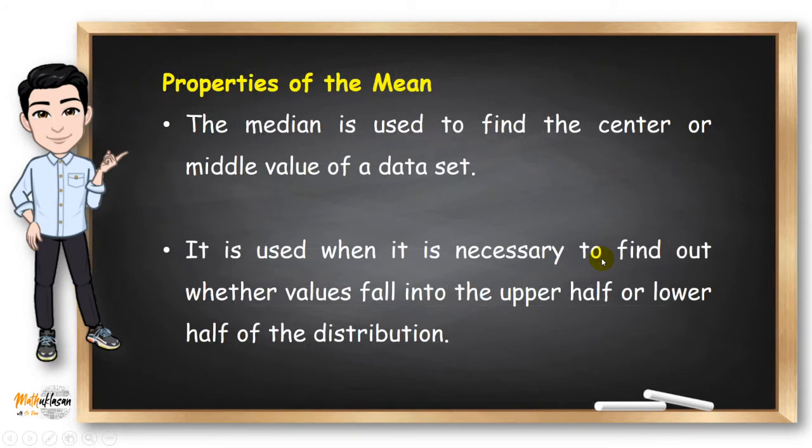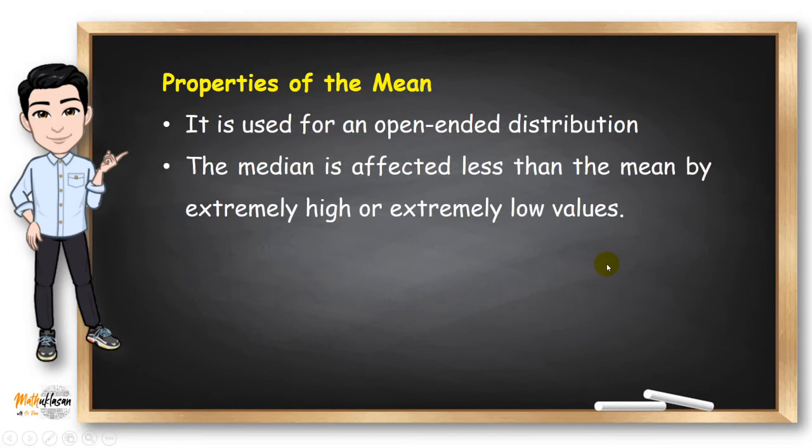The median is used to find the center or middle value of a data set. So if you are trying to find out whether values fall into the upper half or lower half of the distribution, you can always use the median. We cannot use the mean for open-ended distribution, so you use median instead. The median is affected less than the mean by extremely high or extremely low values. So if outliers are involved, you can use the median instead of the mean.